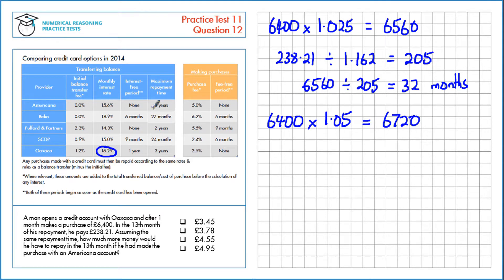In the thirteenth month, we look at the Americana, there's no interest-free period, so there will be interest added in that month. There's an interest rate of 15.6%.